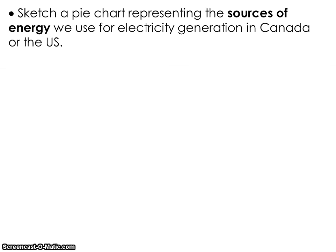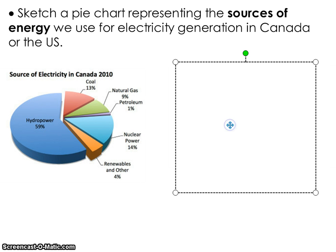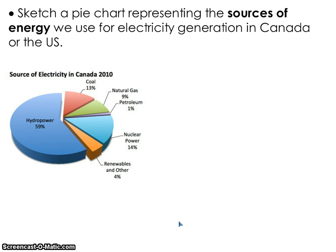Since energy is defined as the capacity to create electricity, it's interesting to consider how we create electricity and what energy forms we use in North America. In class, I asked you to sketch a graph of what forms of energy are used to create electricity in Canada and then compare that to the United States. In Canada, most of the electricity we get is sourced from hydropower, using dammed lakes, primarily found in B.C. and Ontario.